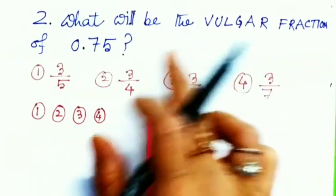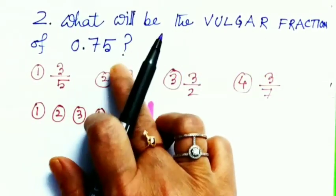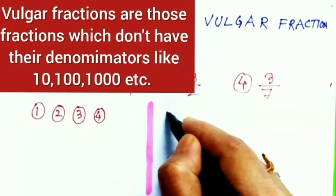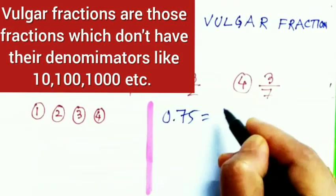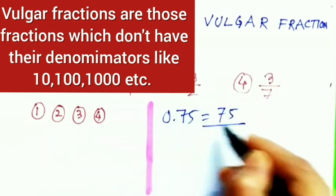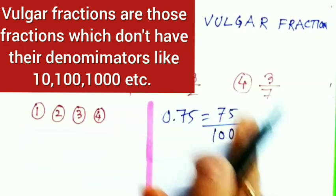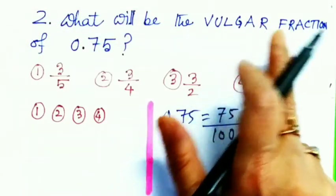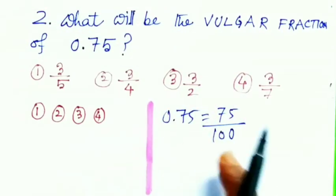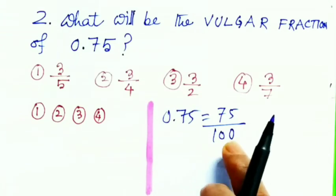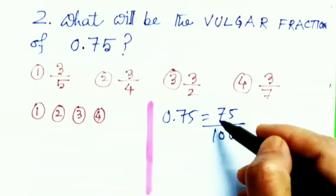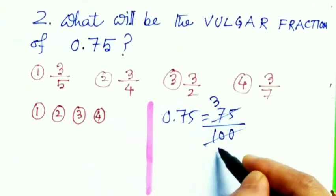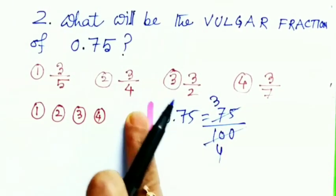Number two: What will be the vulgar fraction of 0.75? Four options are given. I'm simply simplifying it. 0.75 equals 75 divided by 100. But what is the vulgar fraction? We can't keep denominator as 10, 100, etc., so I'm simplifying it, cancelling out with 25. 25 threes are 75, 25 fours are 100. That means 3/4 is the correct option, so two is the answer.